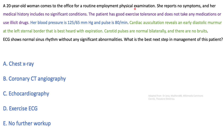A 20-year-old woman comes to the office for a routine appointment. Physical exam shows she is asymptomatic with no significant medical history, good exercise tolerance, no medications, and no illicit drugs. Normal vitals. However, cardiac auscultation reveals an early diastolic murmur at the left sternal border that is best heard with expiration. This is the only abnormality we see in this 20-year-old woman.